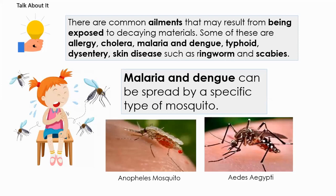There are common ailments that may result from being exposed to decaying materials. Some of these are allergy, cholera, malaria, and dengue, typhoid, dysentery, and skin diseases such as ringworm and scabies.